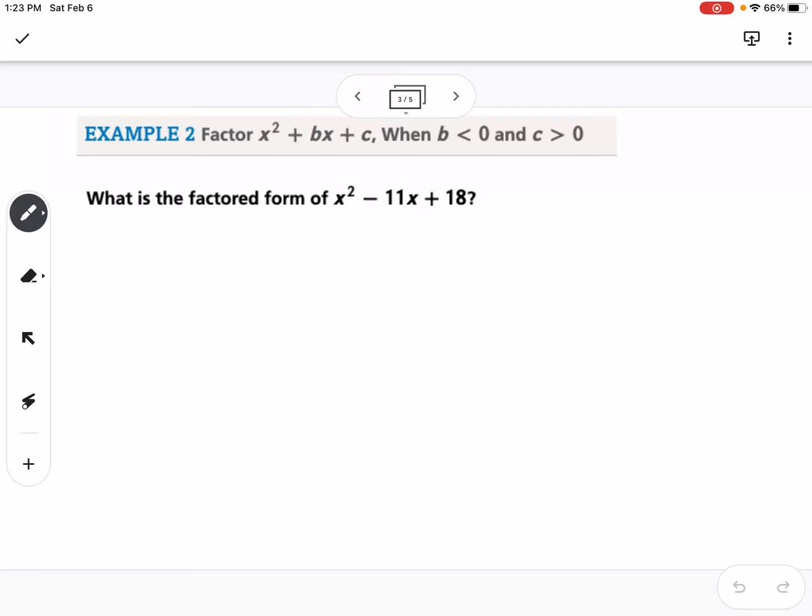Okay, so our next example, what is the factored form of x squared minus 11x plus 18? So notice on this one, we need to find factors of 18, factors of 18, but they need to add to negative 11. So the fact that they're adding to a negative number, but they're multiplying to a positive 18 means that both of them are going to have to be negative.